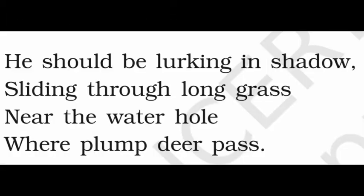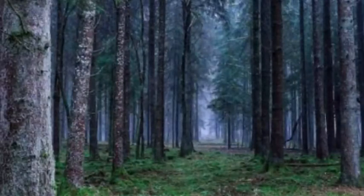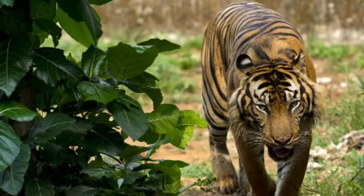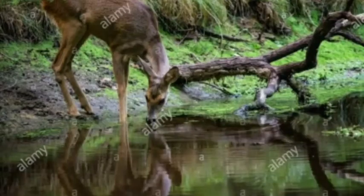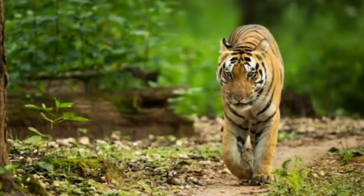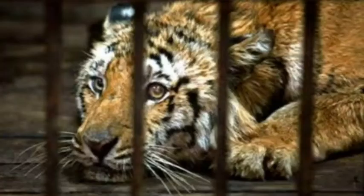Now let's look into the second stanza: He should be lurking in shadow, sliding through long grass, near the water hole where plump deer pass. In this stanza, the poet takes us into the atmosphere of a forest where the tiger was free. The poet imagines that if the tiger was not confined to the cage, he would have been hiding behind long grass near some water body, so that he could easily catch a deer for food.